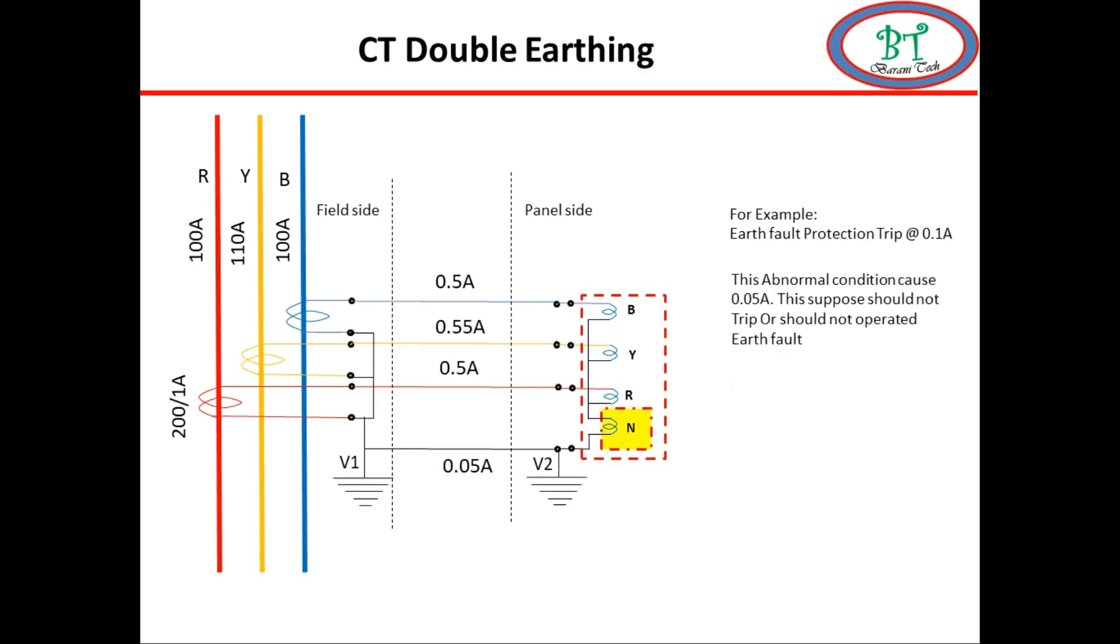But due to multipoint earthing sometime the potential difference may occur due to different resistance value on the earth point. Which lead to additional current flow on neutral line. This may exist more than settings value and which lead to trip.